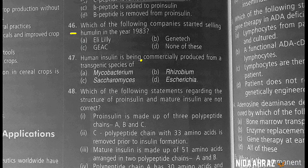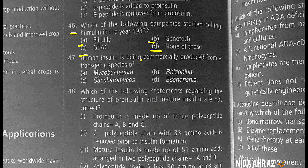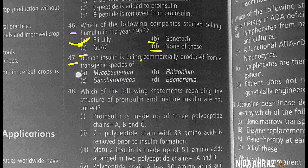Which company started selling humulin in 1983? The correct choice is Eli Lilly. Human insulin is being commercially produced from a transgenic species of E. coli. The correct choice is option D: E. coli.